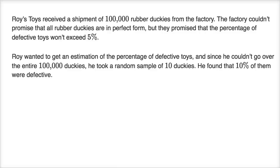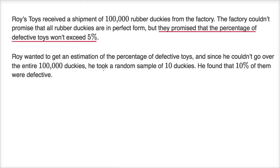Let's take a look at some statistical studies and see if we can figure out what type they are. Roy's Toys received a shipment of 100,000 rubber duckies from the factory. The factory couldn't promise that all rubber duckies are in perfect form, but they promised that the percentage of defective toys won't exceed 5%. Roy wanted to get an estimation of the percentage of defective toys, and since he couldn't go over the entire 100,000 duckies, he took a random sample of 10 duckies. He found that 10% of them were defective.